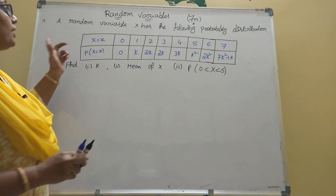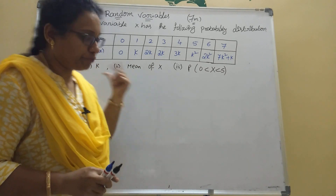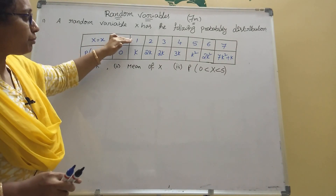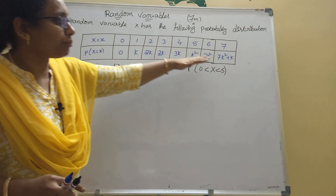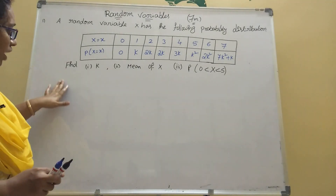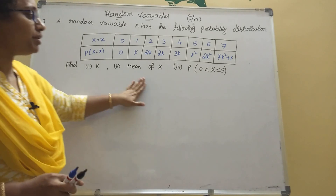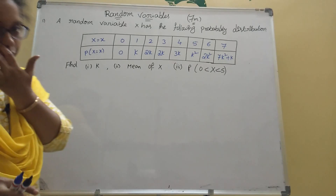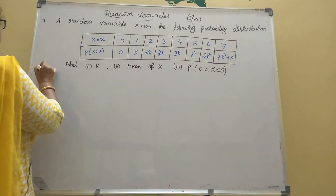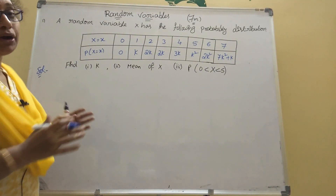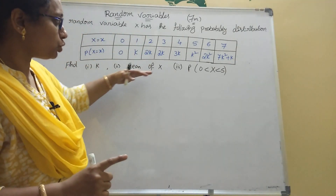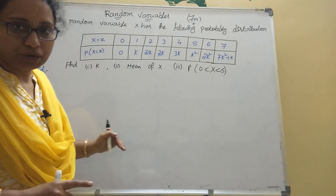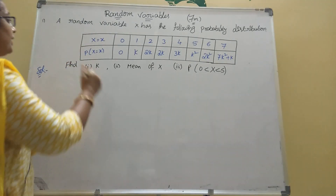A random variable x has the following probability distribution. The x values are given, and the probabilities p(x) are given: the first probability is k, second is 2k, and so on, up to terms from zero to seven. There are three questions: find k, find the mean of x, and find the probability of zero less than x less than five.